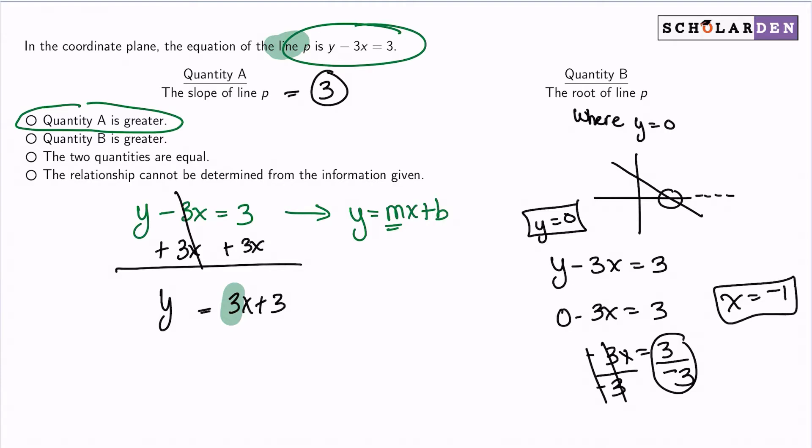So with that said, the root is negative 1. Therefore, quantity A is greater. So there we are. Just understand the concepts here, get it quick, and you're good. See you in the next question.